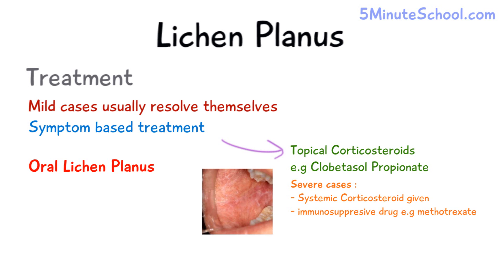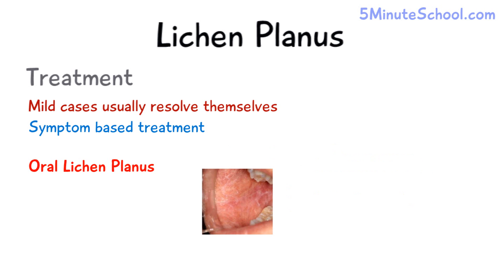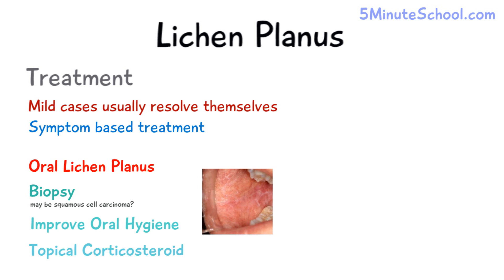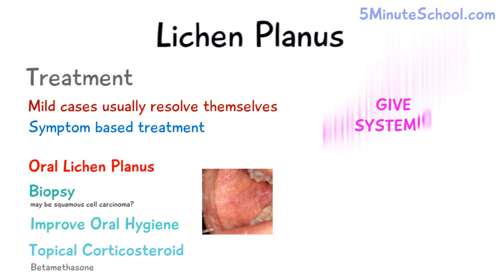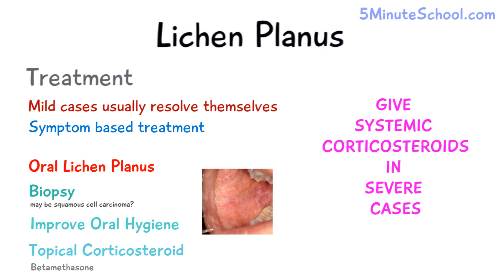With lichen planus lesions in the oral cavity, it's important to have an exact diagnosis before a treatment plan is made, because the papules and Wickham striae may resemble other diseases like squamous cell carcinoma. Therefore, a biopsy should be taken before further treatment. Treatment of lichen planus in the mouth involves improving oral hygiene, application of topical corticosteroids like betamethasone, or giving systemic corticosteroids in severe cases.